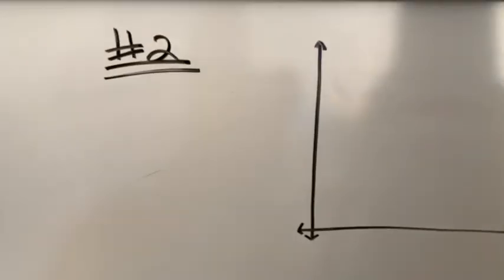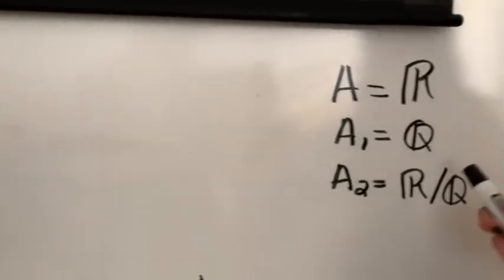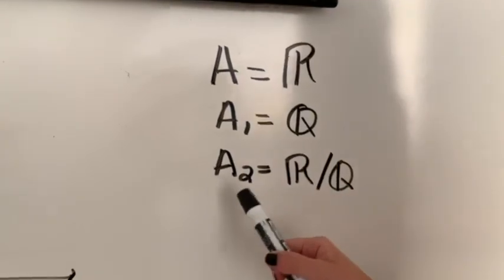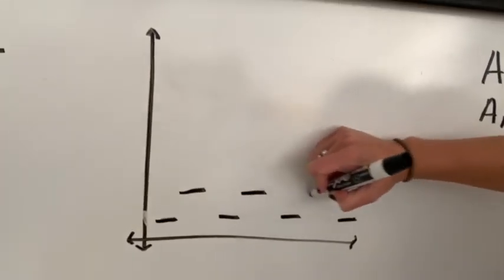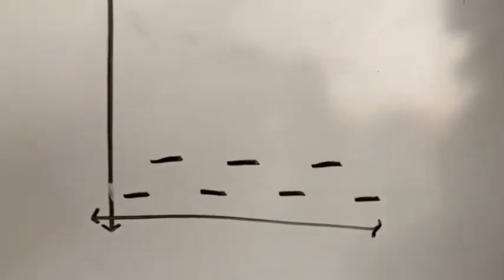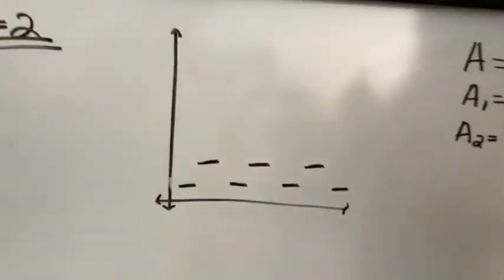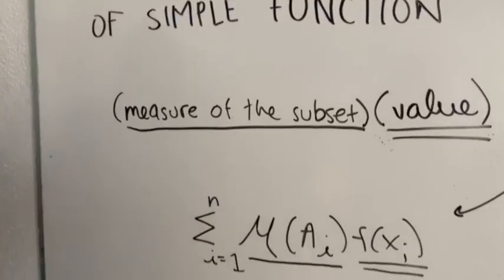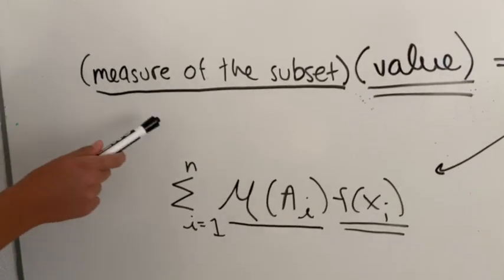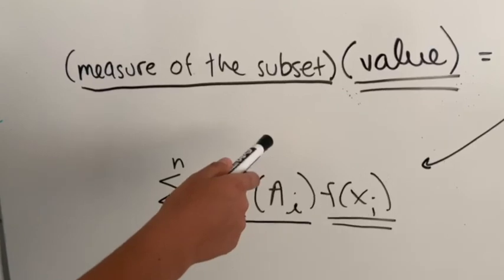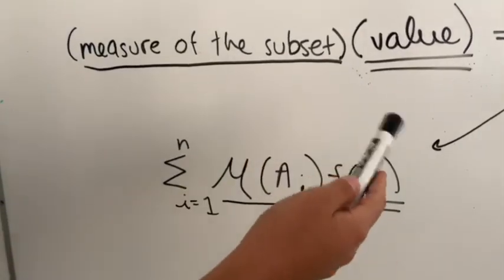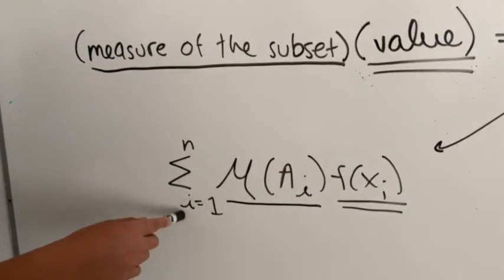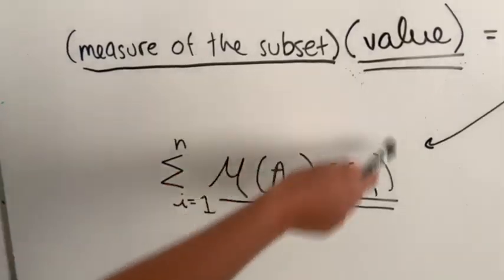For the final example, we have a subset of all real numbers. So our a1 is going to be rational numbers, and our a2 is going to be irrational numbers. So our graph will look something like this, which means it will be constant by subsets. The integral of a simple function is expressed in the next formula — we multiply the measure of the subset times the value previously assigned to the subset, and it is the sum of those products.